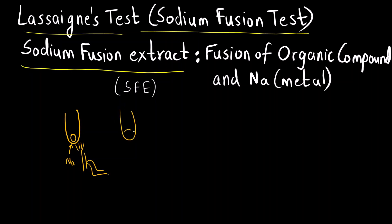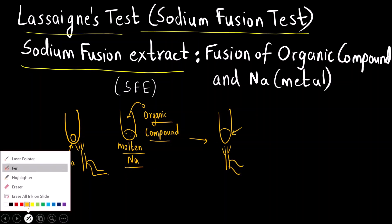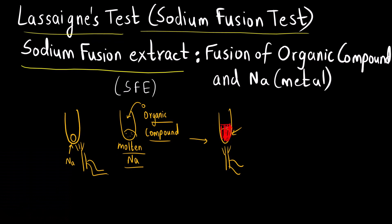You heat it until you get molten sodium. Into this molten sodium, you add a small amount of the organic compound you want to analyze. Then you heat again. The molten sodium and the molten organic compound mix together, and you continue heating the test tube until it becomes red hot.